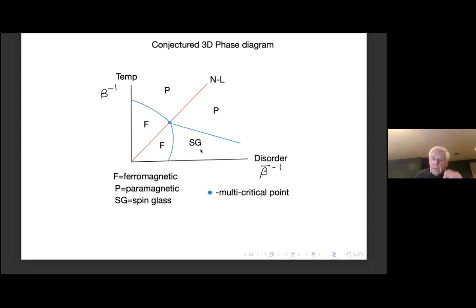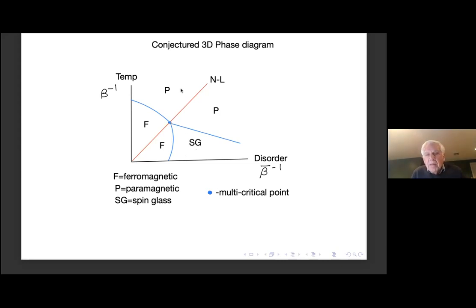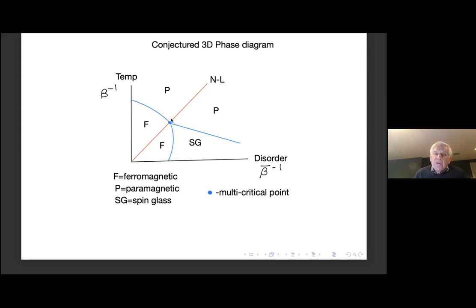There's a beautiful conjecture, checked numerically, that the Nishimori line goes right through the multicritical point that separates the paramagnetic, ferromagnetic, and glassy phases. We don't have the tools to get near this multicritical point — that's a very challenging problem. What we do is at low temperatures and low disorder, we work along this very special line, which is the Nishimori line where beta equals beta-bar. This line is at a 45-degree angle.